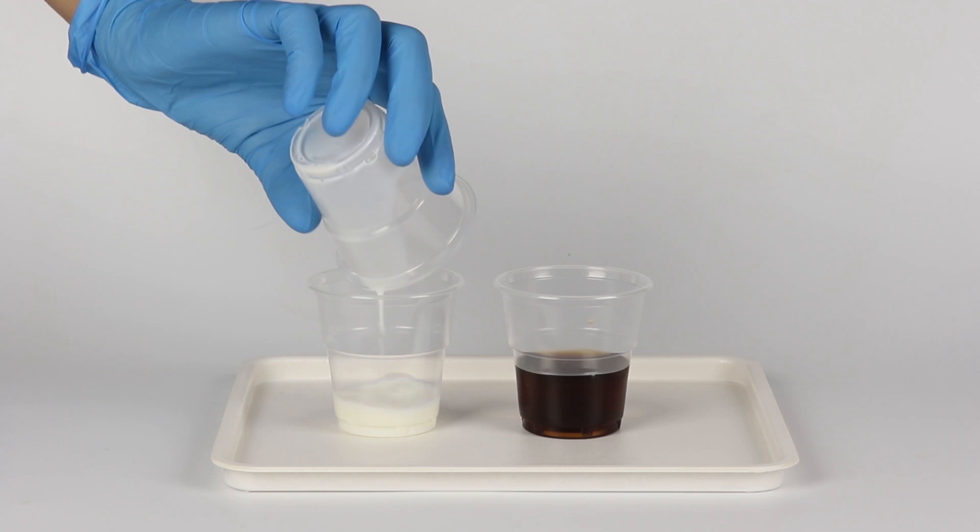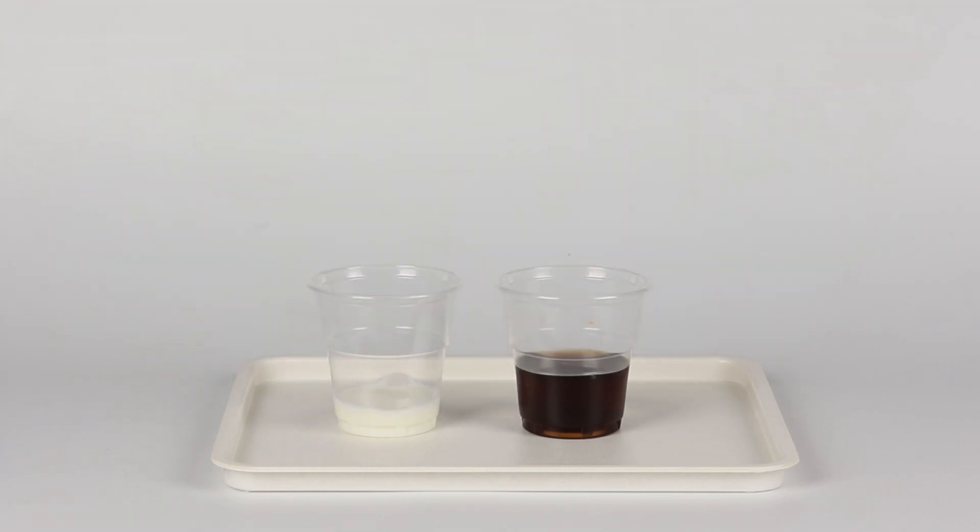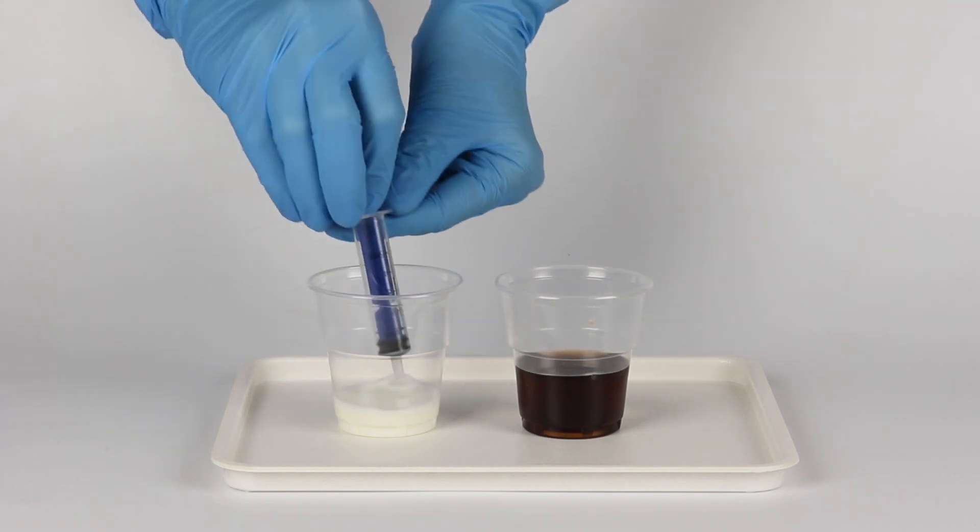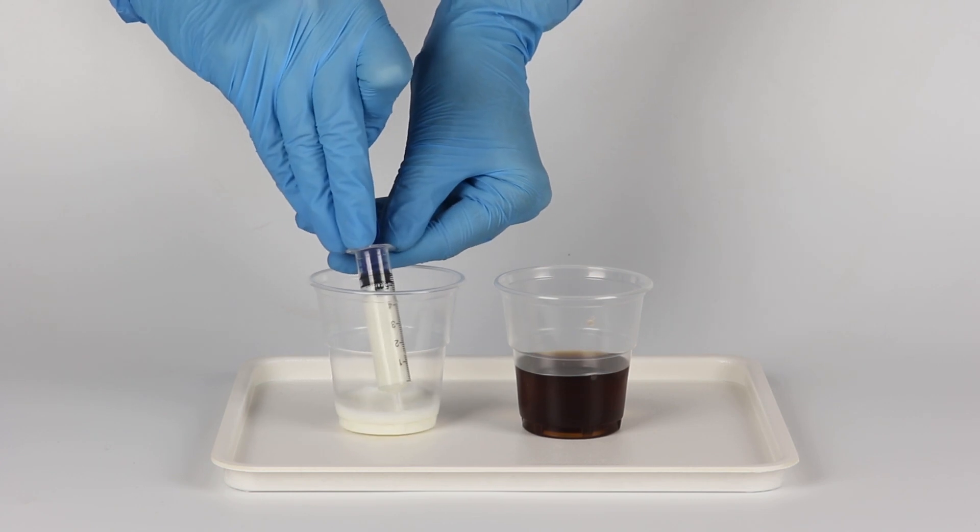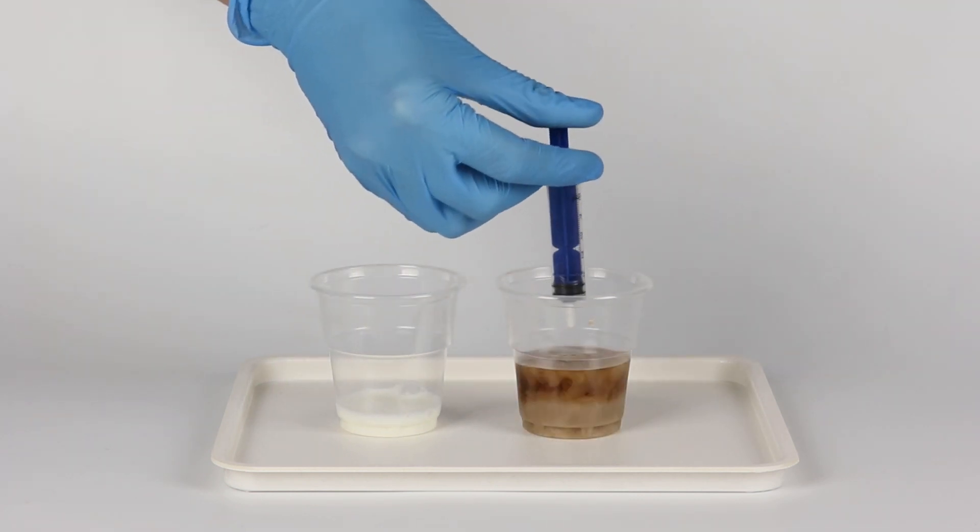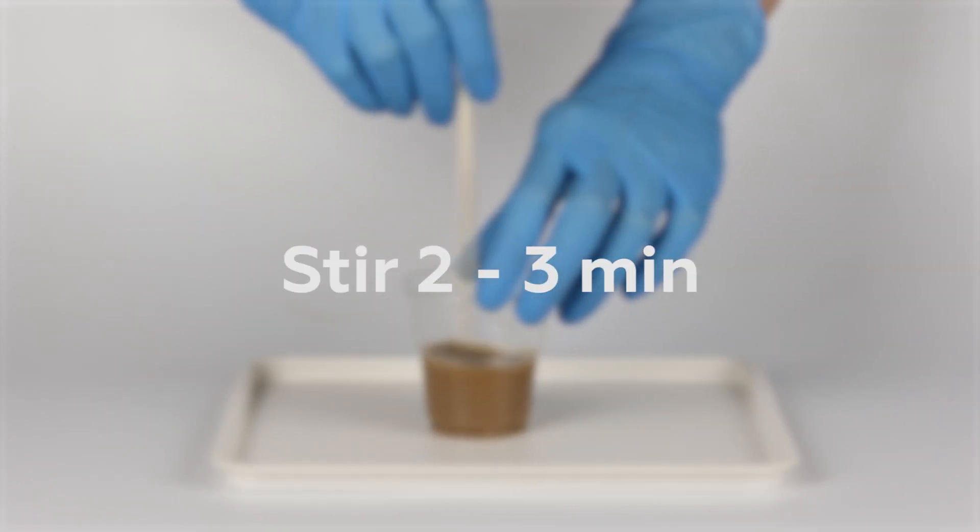Fill another disposable cup with milk approximately a quarter full. Measure five milliliters of milk using the syringe and add it to the cup of cola. Stir the obtained mixture for two to three minutes.